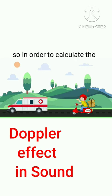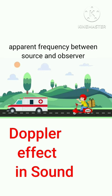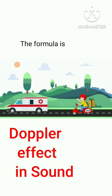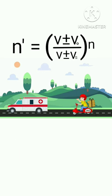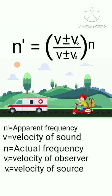In order to calculate the apparent frequency between source and observer, the formula is: n' = (v ± v₀) / (v ± vs) × n, where n' is the apparent frequency, n is the actual frequency, v is the velocity of sound, v₀ is the velocity of the observer, and vs is the velocity of the source.